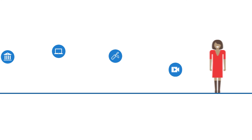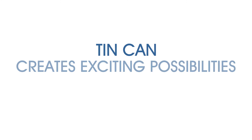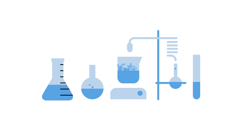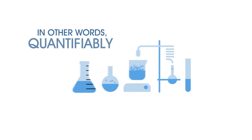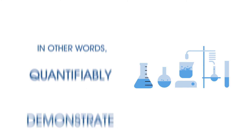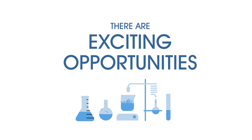The Tin Can API greatly simplifies this data sharing and creates very exciting long-term possibilities. Because of the way Tin Can is structured, we're now able to record actual job performance and behavior data in the LRS alongside the training and learning data. This means it is suddenly possible to correlate changes in behavior with training effectiveness. In other words, we can start to quantifiably demonstrate the effectiveness and ROI of our training programs. There are exciting opportunities for companies that take advantage of the reporting and analytics aspects of Tin Can.